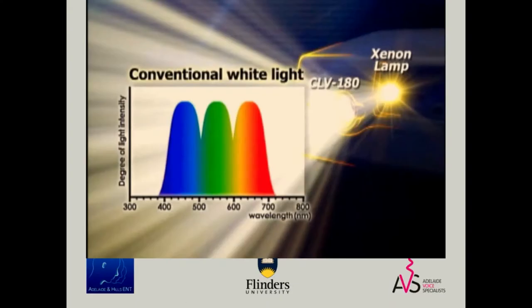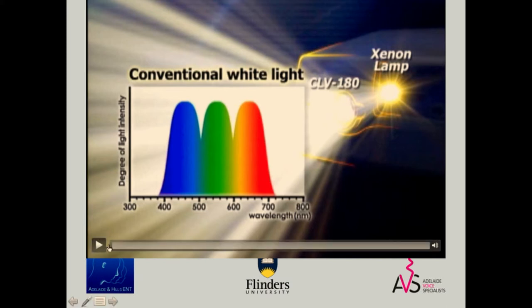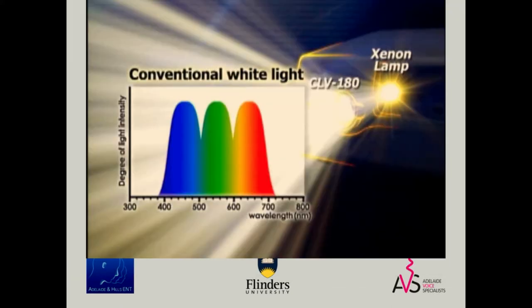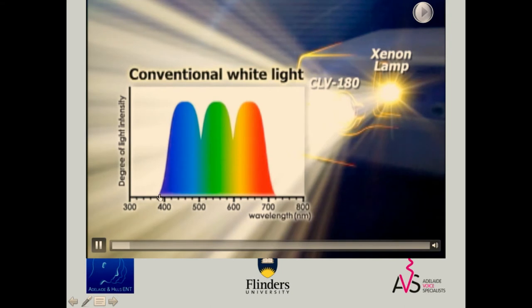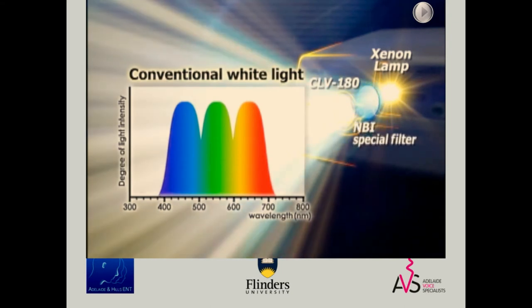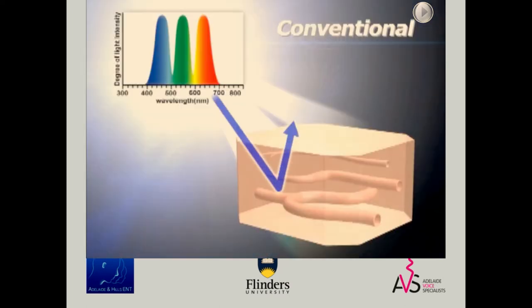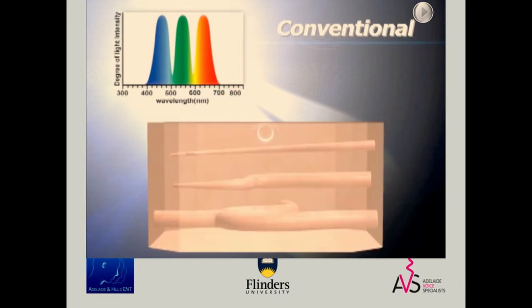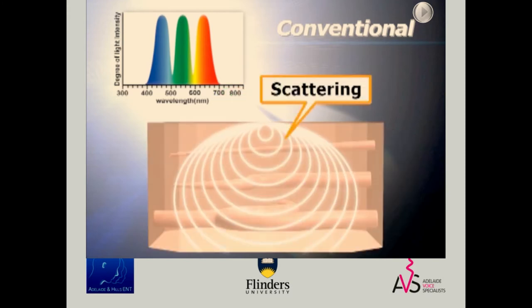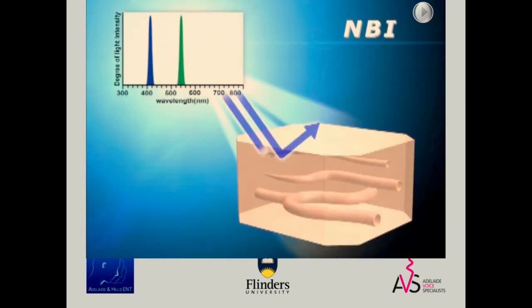This is an older video using the older 180 series, which is probably obsolete now in most places, though some hospitals still use it. You've got the old xenon lamp — we're moving more towards LEDs these days. That produces a broad spectrum. Conventionally you have quite a wide scattering of light, and then narrow band imaging narrows that down to just the blue and green wavelengths, where haemoglobin absorbs the most, allowing a narrower scattering effect and better visualisation.